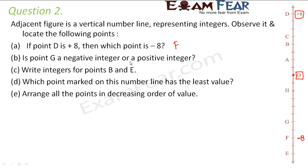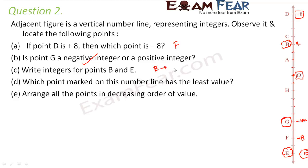Is point G a negative integer or a positive integer? G is below the origin, so anything below is negative — G would be a negative integer. For points B and E: if F is minus eight, the next point down would be minus nine and then minus ten, so E equals minus ten. B is four points above zero, so B equals plus four.